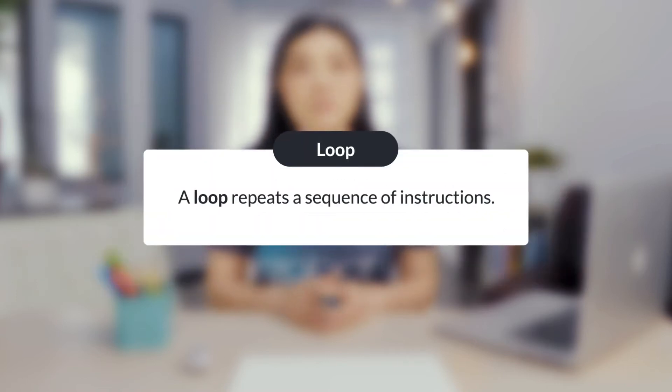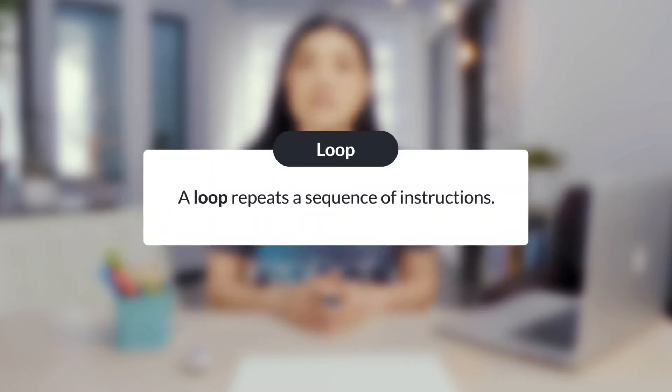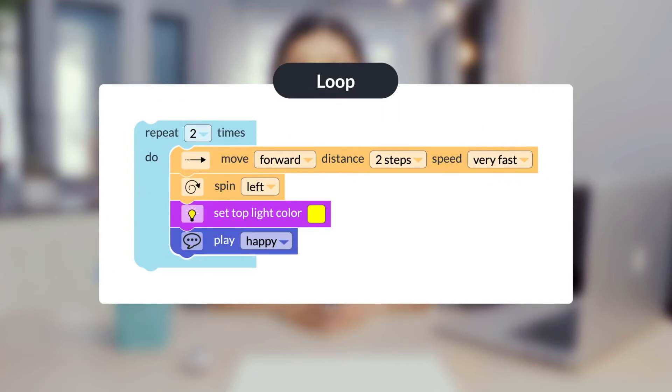A loop repeats a sequence of instructions. Here's the same code with a loop block. The sequence would repeat two times.